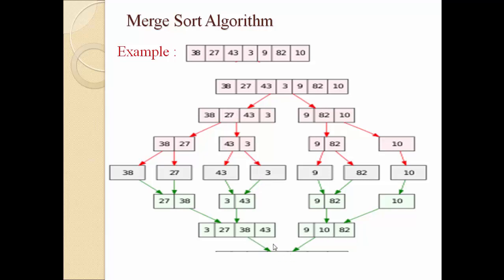Now when we merge both lists, the first element of the first part is compared with the first element of the second part. We use index I for the first array and index J for the second array. We compare 3 with 9 — minimum is 3, so 3 is inserted first. Index I increases to point to 27; then 27 is compared with 9, and 9 is minimum so 9 is inserted. Index J increases to 10; then 27 and 10 are compared, 10 is minimum so 10 is stored. Then 27, 38, 43, and finally 82 are inserted. In this way we get the list in ascending order — this is the Merge Sort Algorithm.